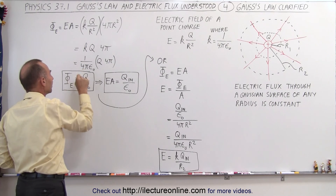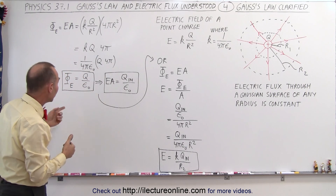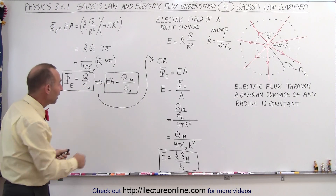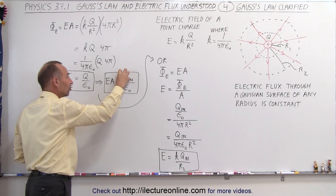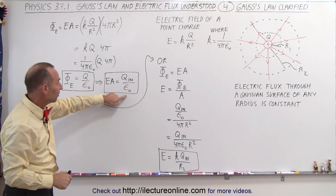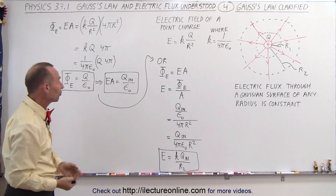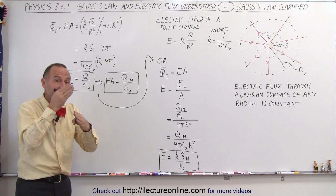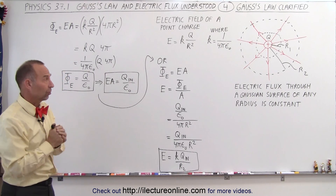Then, remembering that K equals 1 over 4π epsilon-sub-nought and substituting, the 4π cancels, and we see that the electric flux is simply equal to the charge inside divided by epsilon-sub-nought. Knowing that electric flux is defined as E times A, we get Gauss's Law: E times A equals the charge inside the Gaussian surface divided by epsilon-sub-nought, the permittivity of free space. Here, E is the magnitude of the electric field perpendicular to the Gaussian surface.